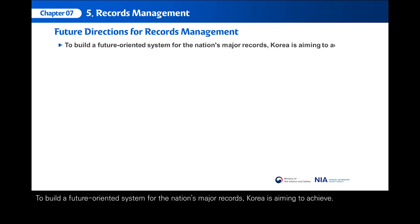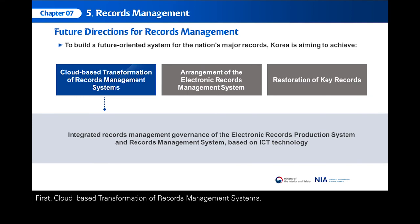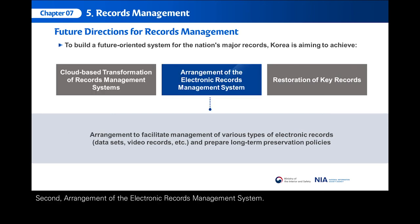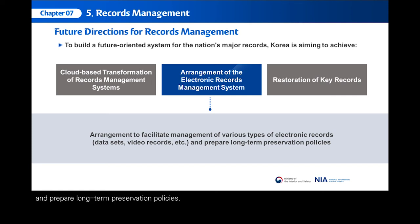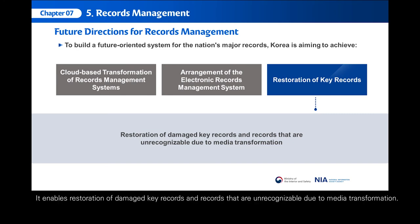To build a future-oriented system for the nation's major records, Korea is aiming to achieve three goals. First, cloud-based transformation of records management systems, including integrated records management governance of the Electronic Records Production System and Records Management System based on ICT technology. Second, arrangement of the Electronic Records Management System to facilitate management of various types of electronic records, such as data sets and video records, and to prepare long-term preservation policies. Third, restoration of key records — enabling restoration of damaged key records and records that are unrecognizable due to media transformation.